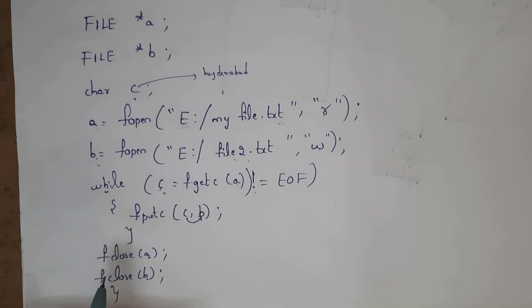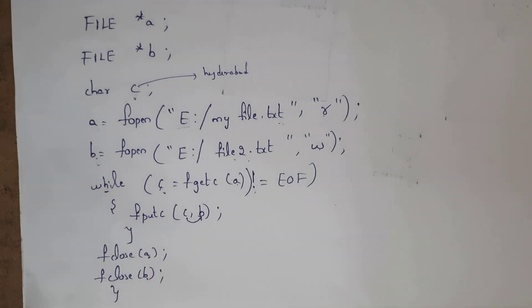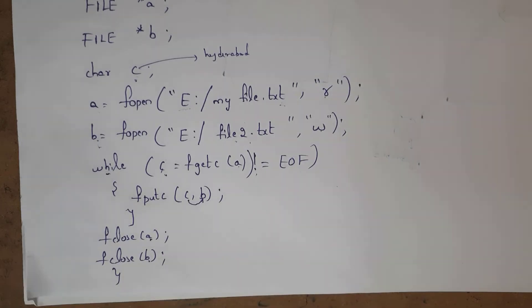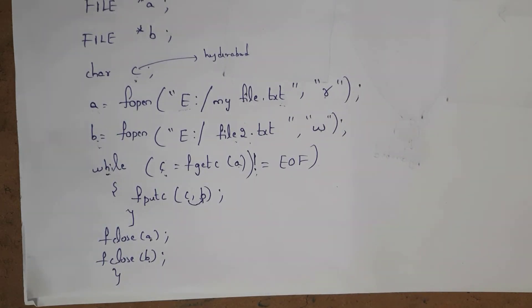At last we need to close both files using the fclose function. By writing this code, my text is copied from one file to another — that is, from myfile.txt to file2.txt.